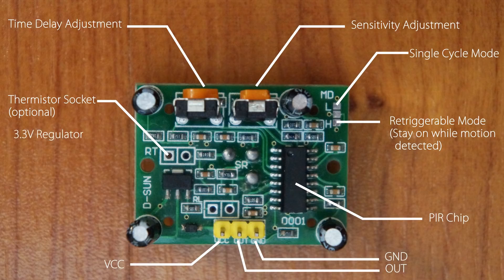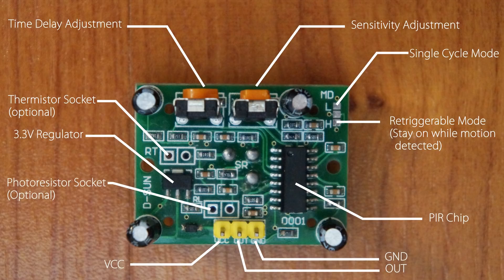Next we have an optional socket to attach a thermistor. Here is the 3.3 regulator which regulates the output pin of this chip. Finally we have an optional socket to add in a photoresistor so that the chip is only active at a certain level of brightness.